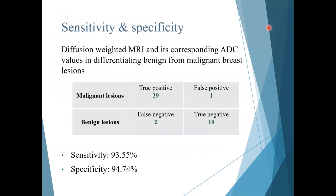The sensitivity of diffusion-weighted MRI and its corresponding ADC values in differentiating benign from malignant breast lesions was 93.5%, and specificity was 94.7%. One patient was a false positive for malignancy on ADC values — the benign phyllodes tumor — and two patients were false negatives — the mucinous carcinoma cases.